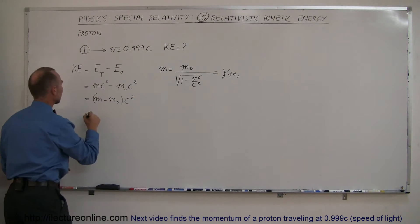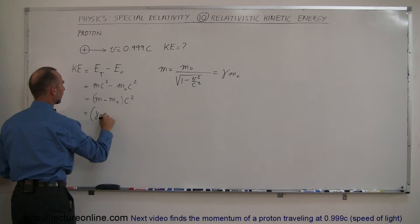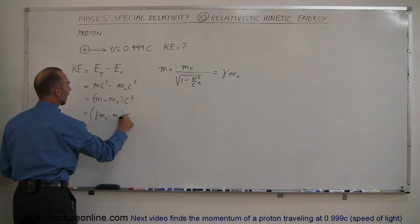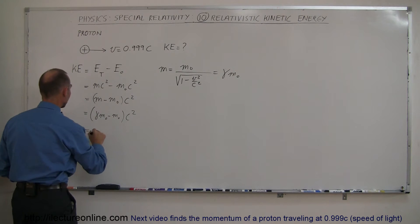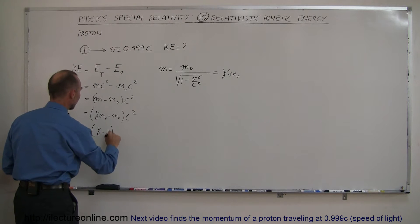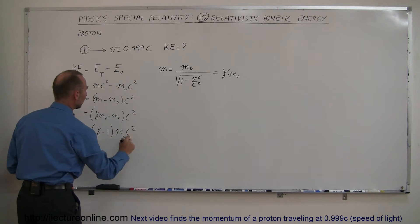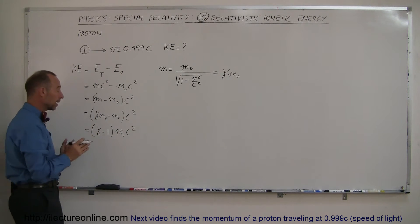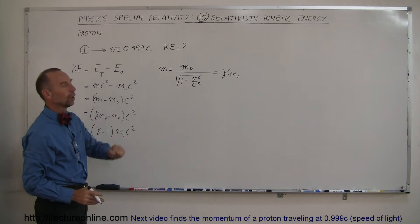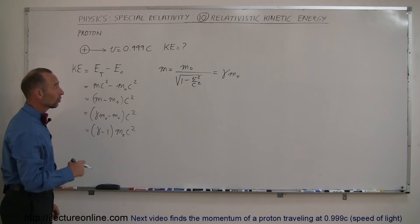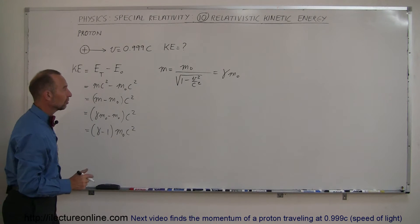I can plug that in here and say this is equal to gamma times m sub-naught minus m sub-naught times c squared. And of course, we can also factor out the m sub-naught, so this is equal to gamma minus 1 times m sub-naught c squared. So the kinetic energy simply becomes the rest mass energy times gamma minus 1, where gamma is equal to 1 over the square root of 1 minus v squared over c squared.